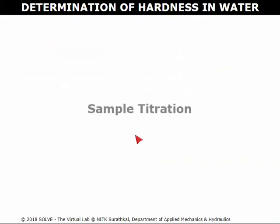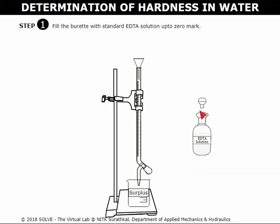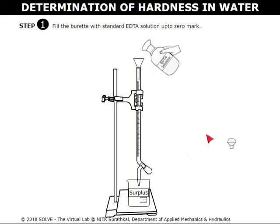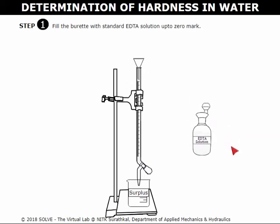Sample titration. Click here to place the funnel into the burette. Click here to open the EDTA solution. Click on the solution to transfer it into the burette up to zero mark. Click on the lid to close the lid. Remove the funnel from the burette.